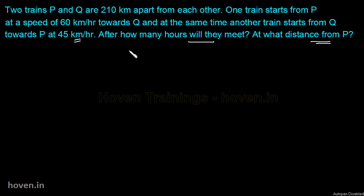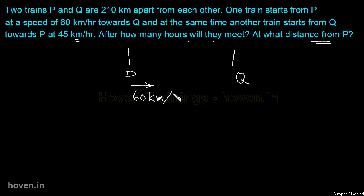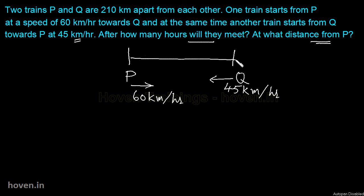So, this diagram can be made. You can write P here and Q here. The train from P is going at 60 km per hour and the train from Q is going at 45 km per hour. The total distance between them is 210 km.